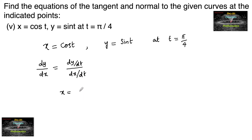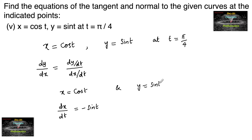Differentiating the curve x is equal to cos t with respect to t, we get dx by dt is equal to minus sin t. And y is equal to sin t; differentiating with respect to t, we get dy by dt is equal to cos t.